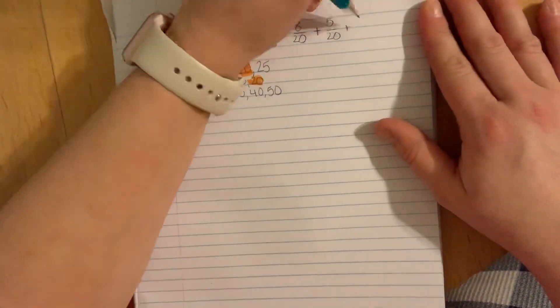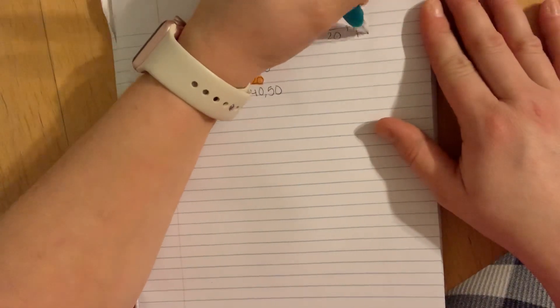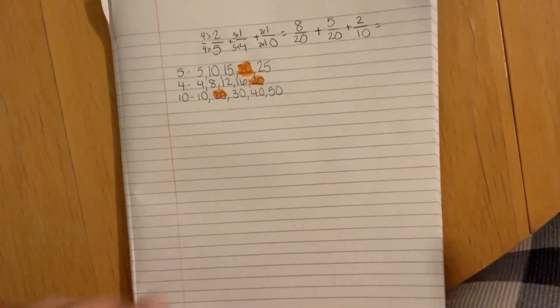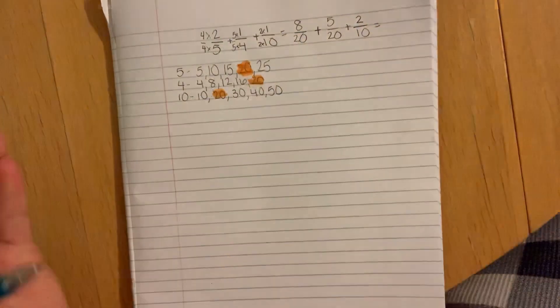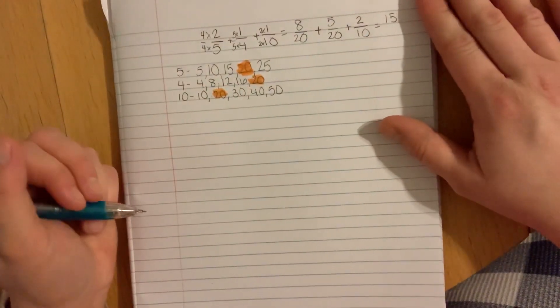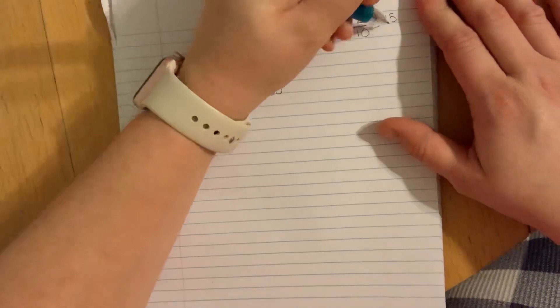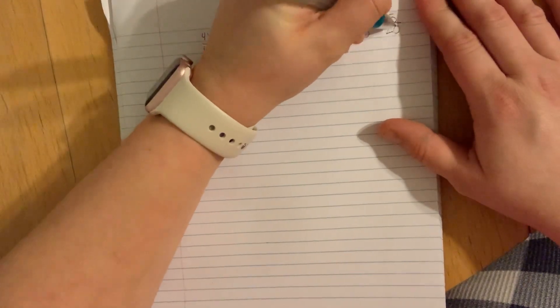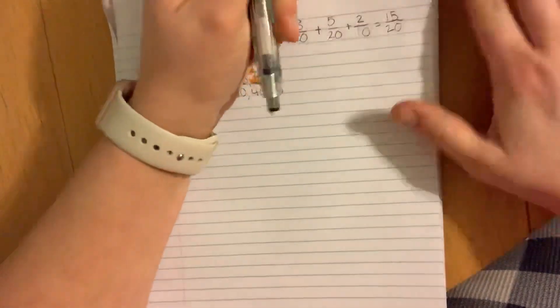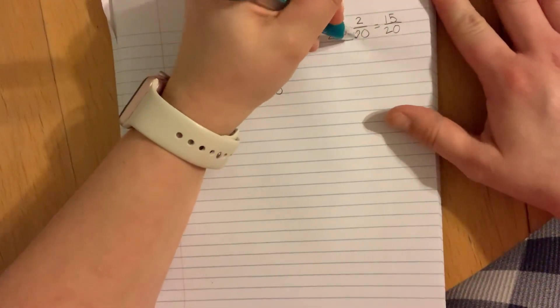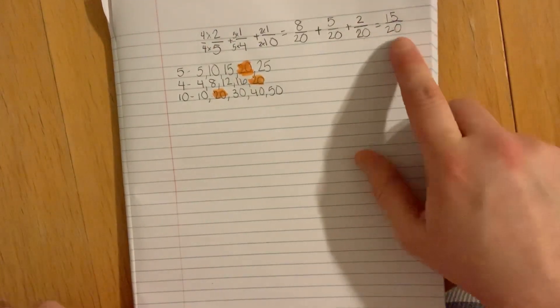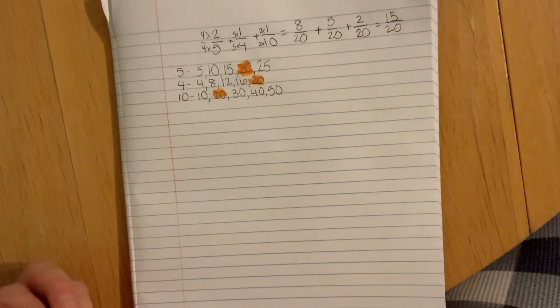Adding them together, I see 8 and 2 which add to give me 10, plus 5 more is 15. Did you guys see my mistake? This is why you always use pencil in math. That's 2 twentieths. So then you get 15 twentieths when you add it together.